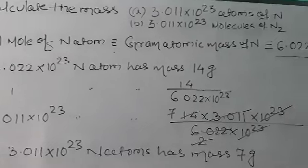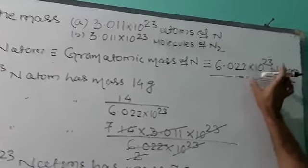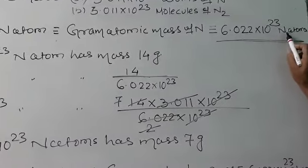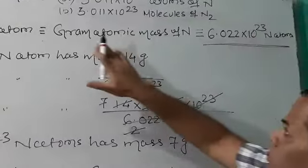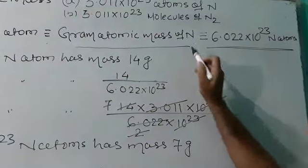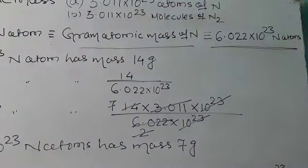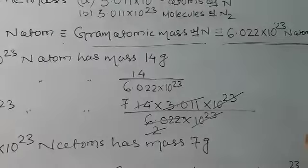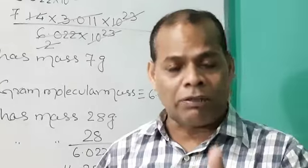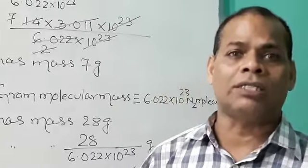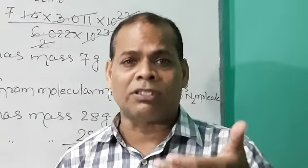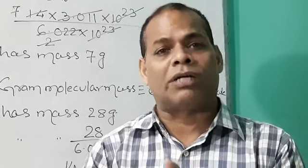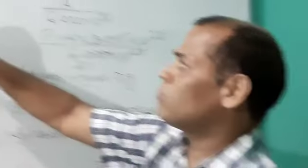So it means 6.022 into 10 to the power 23 nitrogen atoms has mass equivalent to gram atomic mass of nitrogen. As we know, the atomic mass of nitrogen is 14 U. When we express atomic mass in gram atomic mass, we call it 14 gram. So gram atomic mass of nitrogen is 14 gram.